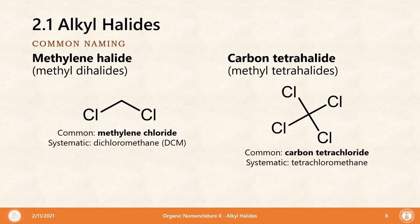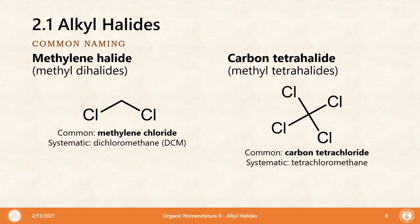There are also common names for methyl groups connected to two halide atoms — we call them methylene halides or methylene dihalides. For example, methylene chloride has two chlorine atoms connected to methyl. Its common and systematic name is dichloromethane, or DCM. For four halogens connected to a methyl group, we term it carbon tetrahalide, which is actually an inorganic name.